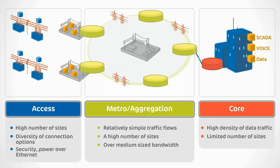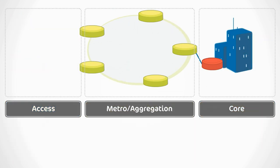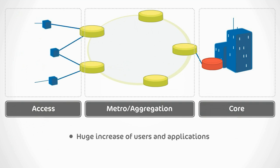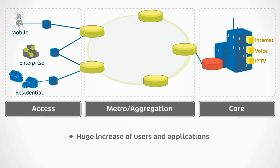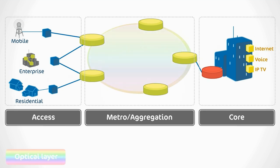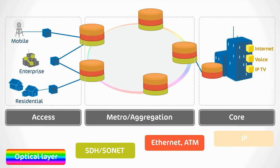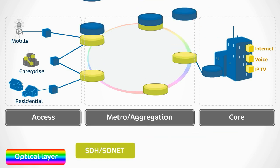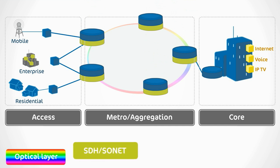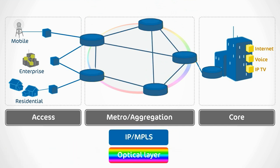Since your network is similar to that of a telco, let's see how telcos have approached the problem — more specifically, how telcos have adapted to the huge increase of users and applications and their geographical spread. Telco operators have optimized their networks by eliminating layers and replacing their aging SDH/SONET infrastructure with directly coupled IP MPLS routers on an optical infrastructure.